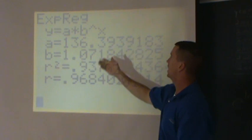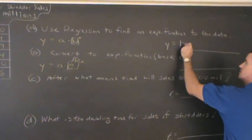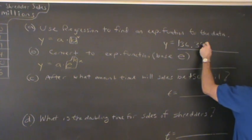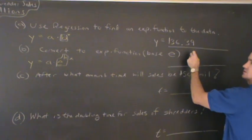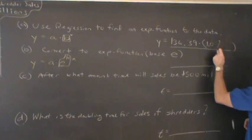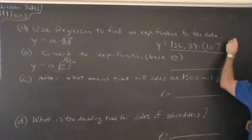And here's my equation, here's my function. I'm gonna put it in right now. This is y equal to 136.3939. That one, I'm just gonna round it to there. It's gonna be times 1.07 raised to the x power.